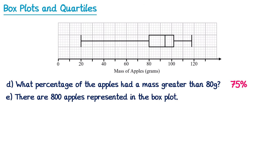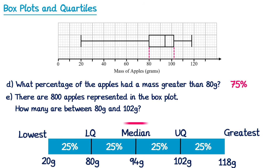Let's try one more like this. There are 800 apples represented in the box plot. How many are between 80 and 102g? So we're trying to work out how many apples are between 80 — the lower quartile — and 102 — the upper quartile. The percentage of apples between the lower quartile and the upper quartile is 2 lots of 25, which is 50%. The question says there are 800 apples in total, so we want 50% of 800, and 50% of that is half of it, which is 400 apples.